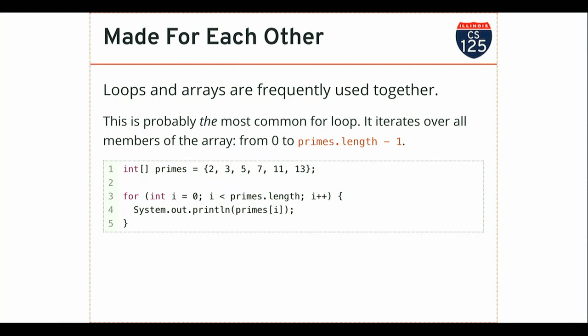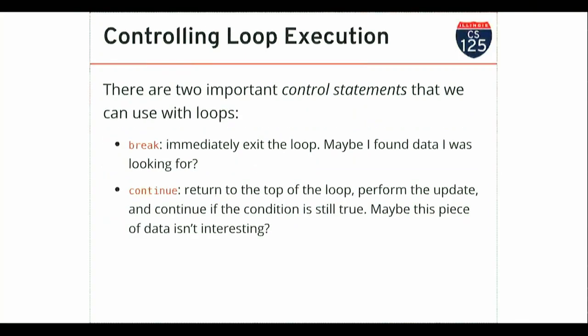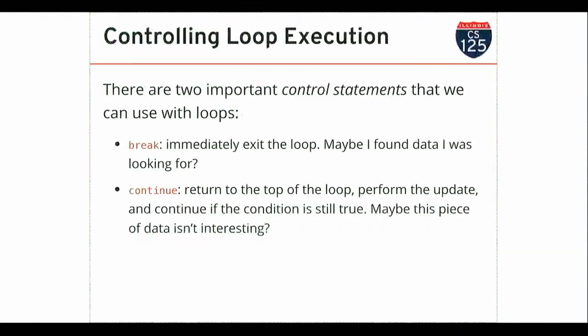We looked at a couple of canonical different looping constructs. This is probably the most common for loop you will ever write — it goes through every item in an array. It starts at zero, continues while the index is less than the length, and increments by one each time. Remember, the index that equals the length is an invalid index, so the last valid one is one before it. This is our three-part for loop. Now I want to briefly talk about a couple of things you can do inside a loop to control how the loop executes.